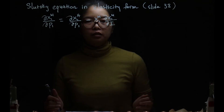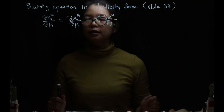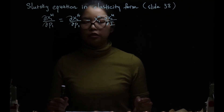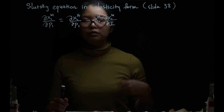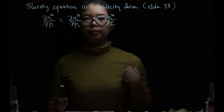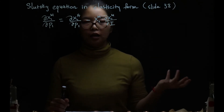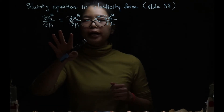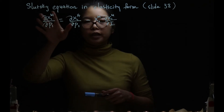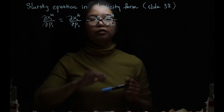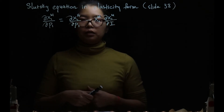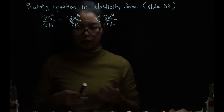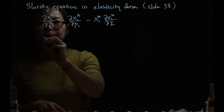One last thing about the Slutsky equation: we can write it in elasticity form, as shown on slide 38. Why might we need different forms of this equation? For convenience — for example, when you write a thesis and want to estimate income or substitution effects for certain goods, it is not always easy to collect all the data empirically. Sometimes the elasticities are already calculated or provided in the literature, which you can use. So it is just an option for convenience.